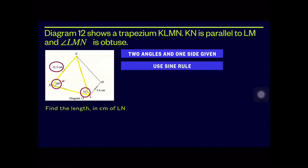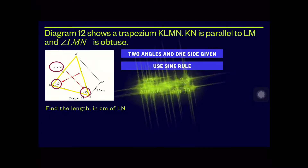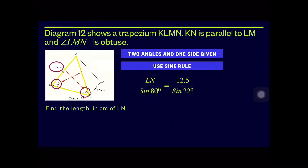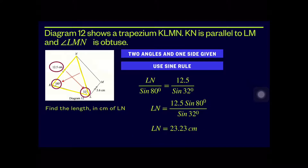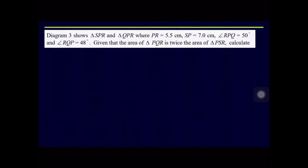To get LN: LN/sin 80° = 12.5/sin 32°. Therefore, LN = (12.5 × sin 80°)/sin 32°. The answer for LN is equal to 23.23 centimeters.